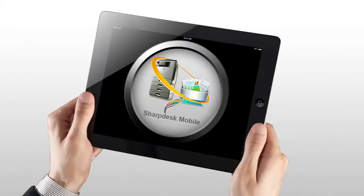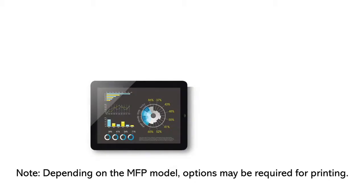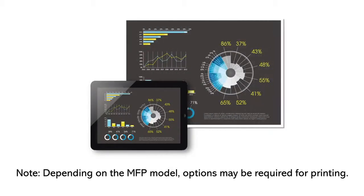It can't be helped because the tablet's screen is so small. At moments like this, Sharp Desk Mobile can help. PDFs and JPEG or TIFF images stored on media tablets or smartphones can be printed out easily from a Sharp MFP in sizes up to A3 or Ledger.